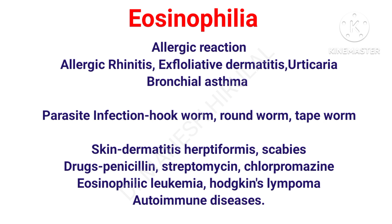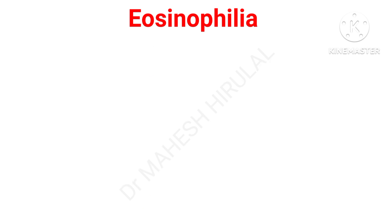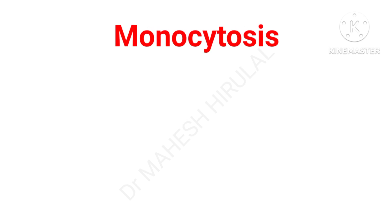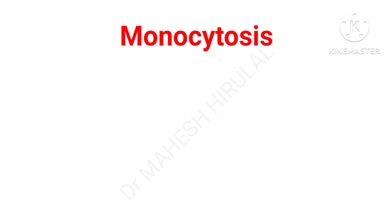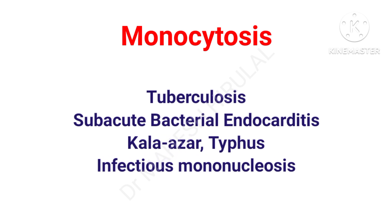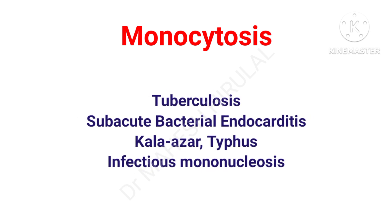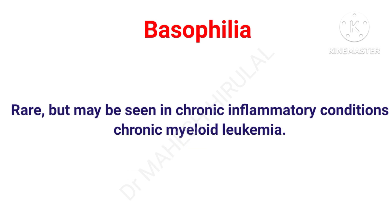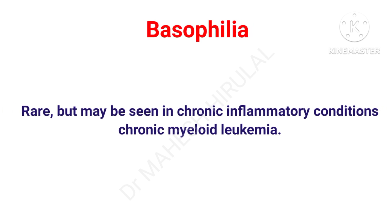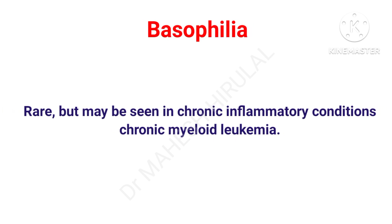Monocytosis is the increase in monocytes, seen in conditions like tuberculosis, subacute bacterial endocarditis, kala-azar, typhus, and infectious mononucleosis. Increase in basophils is a rare condition. It can be seen in chronic inflammatory conditions and in chronic myeloid leukemia.